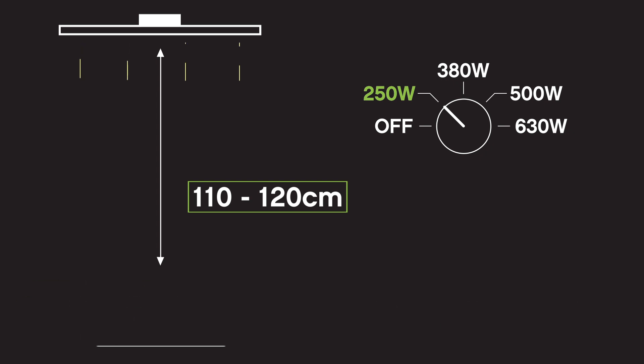By the time your plant has grown to around 30 centimeters in height, you should be at a distance of 100 to 110 centimeters between the two, and you can raise the dimming on your LED from 250 watts to 380 watts.